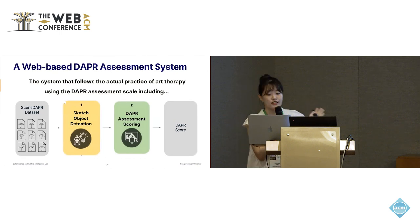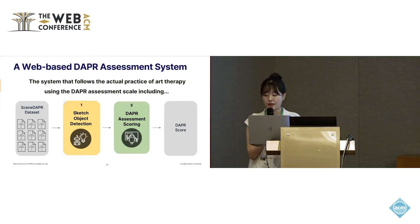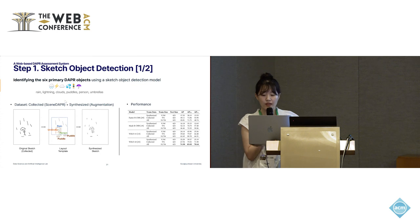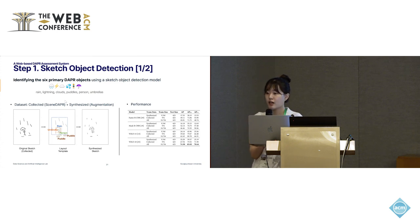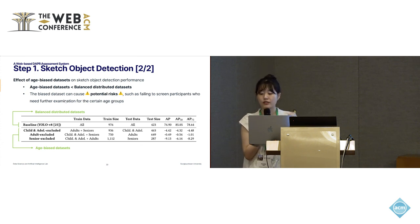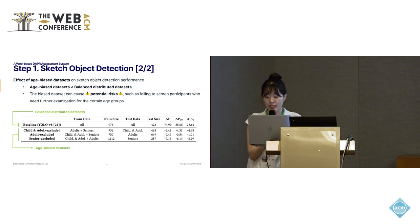With the Scene-DAPR dataset, we propose a web-based DAPR assessment system. This system follows actual art therapy practice, focusing on two main steps: detecting objects in sketches and scoring the DAPR assessment. The first step is identifying the six representative DAPR objects using a sketch object detection model. For developing this model, we synthesized images by employing sketch augmentation techniques. YOLOv8 showed the best performance in detecting sketch objects among the various baseline models. We also investigated the effect of an age-biased dataset on model performance; overall, the performance of age-biased datasets was lower than those of the balanced dataset across age groups, suggesting that a biased dataset which does not include a specific population can cause potential risk.